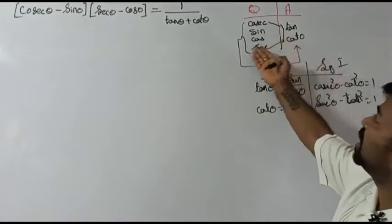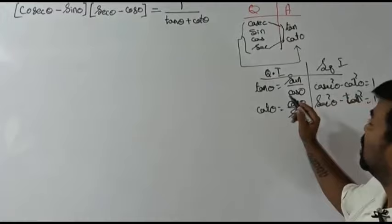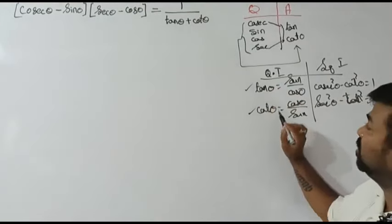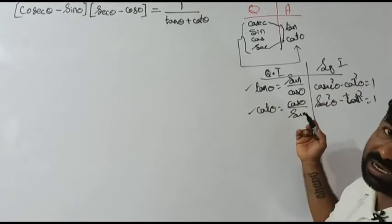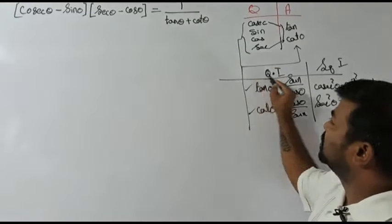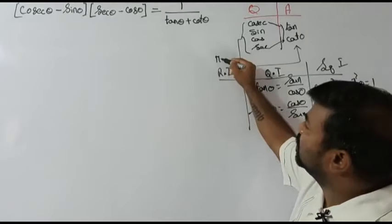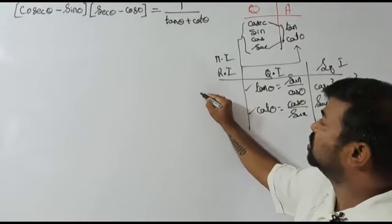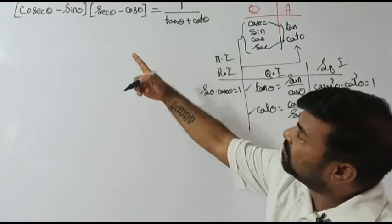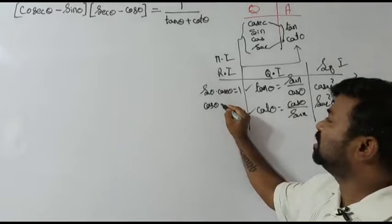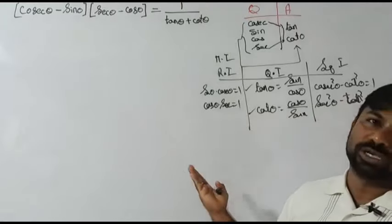These are the square identities and quotient identities which relate these terms. Also keep in mind the reciprocal identities: sine θ into cosecant θ equals 1, and cos θ into secant θ equals 1. These are all the identities we are supposed to use while dealing with this problem.